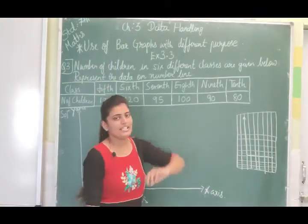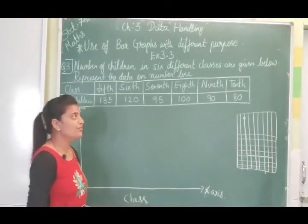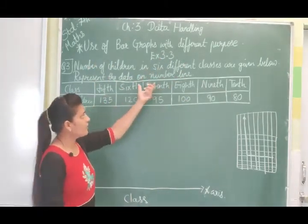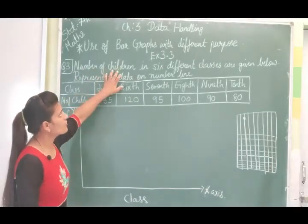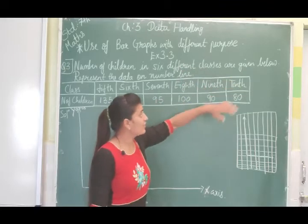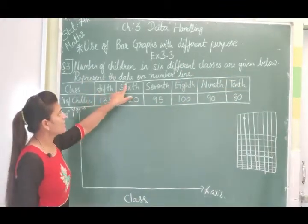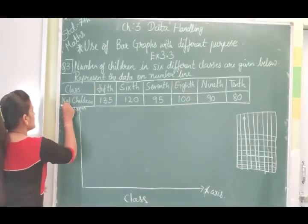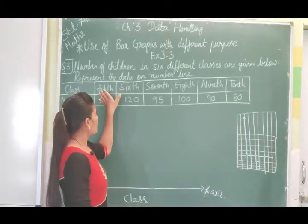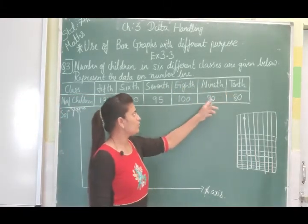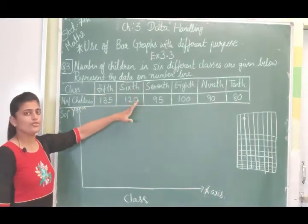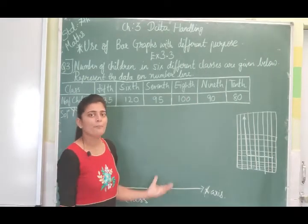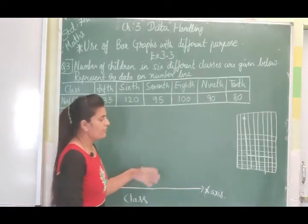Class 7 math, chapter 3: Data Handling. Today we are going to learn about the use of bar graphs with different purposes. Exercise 3.3, question 3 is given to you. The number of children in six different classes are given below. Here you can see the table representing the data. Observations, meaning the number of children in each class, are given to you. Six classes are given and the number of children in each class are given.